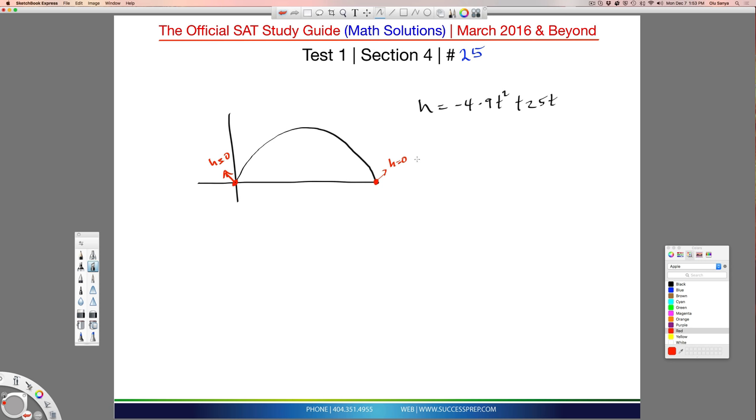So anytime a question like this on the SAT gives you a projectile motion like this and gives you a quadratic equation, and asks how much time will it take for it to hit the ground, it's essentially saying make the H zero.